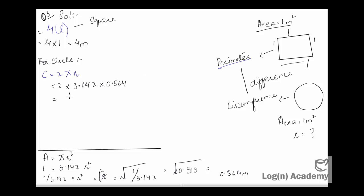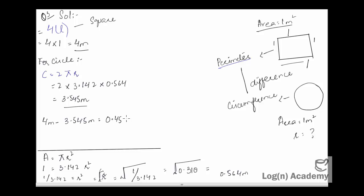پوری کیلکولیشن پرفارم کرنے کے بعد سرکمفیرنس آیا 3.545 میٹر۔ اب سکوائر کا پیریمیٹر اور سرکل کا سرکمفیرنس — دونوں کا ڈیفرنس نکالیں گے: 4 میٹر − 3.545 میٹر = 0.455 میٹر۔